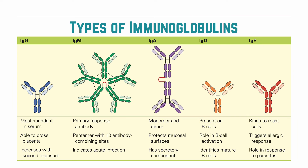There are five types of immunoglobulins or antibodies, each distinguished by the type of heavy chain they have. First, we have IgG, which has the gamma heavy chain; IgM, which has the mu chain; IgA, which has the alpha chain; IgD, which has the delta chain; and IgE, which has the epsilon chain. In this table, you can see the different structures of each type of immunoglobulin and a rundown of their different functions, which we will discuss in turn.